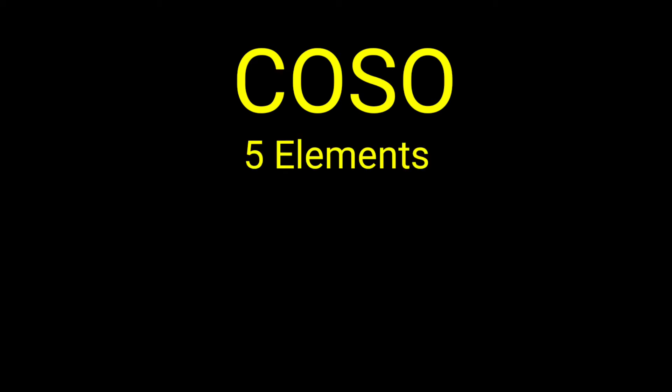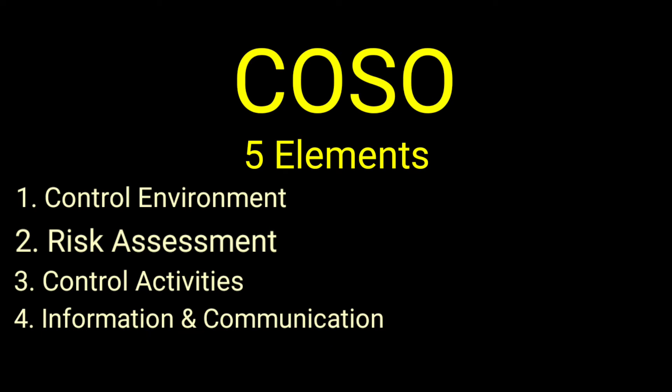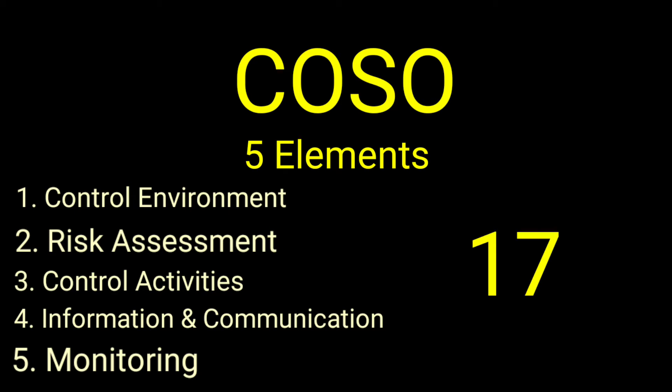Let us discuss the five main elements of COSO: 1. Control Environment, 2. Risk Assessment, 3. Control Activities, 4. Information and Communication, 5. Monitoring Activities. Each component includes principles, and there are 17 principles in all.